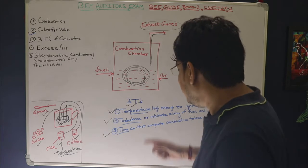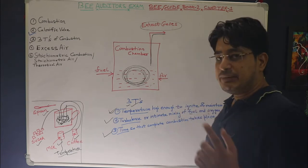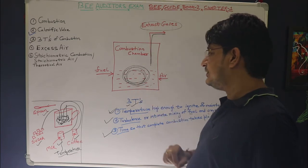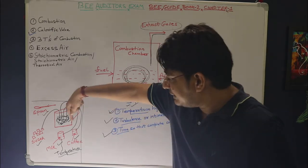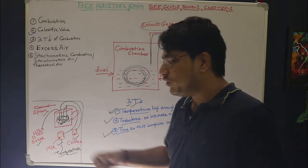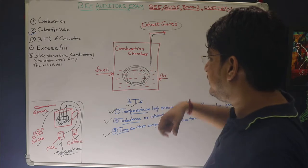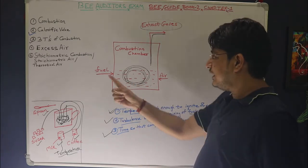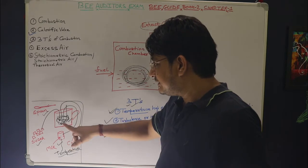As you stir the mixture the three things get mixed — this mixing is required for a proper coffee to be made. Similarly, once fuel and air have entered the combustion chamber, a mechanism is required to ensure proper mixing of air and fuel. We need to agitate the mixture, to create turbulence. Turbulence is nothing but agitation — just like stirring the coffee, you are agitating the mixture.